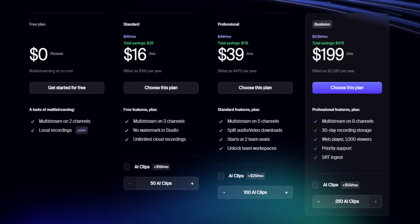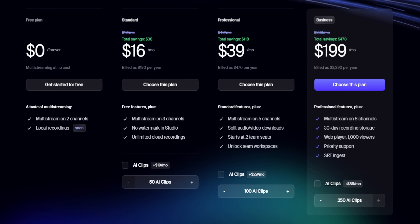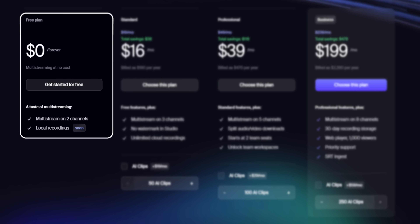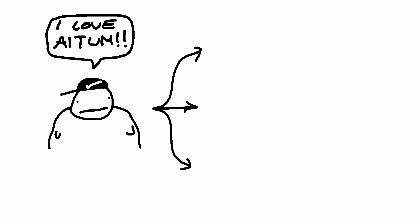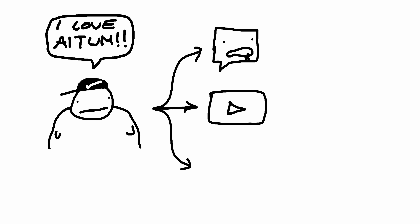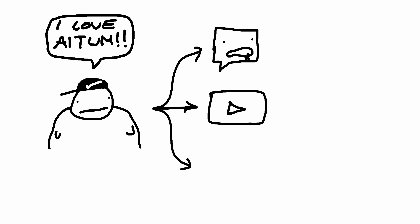The only thing is, Restream.io does cost money — but only if you want to stream to more than two places. Here's my solution to use it without paying a single cent: we're going to use ATOM Multistream to stream to Twitch, YouTube, or wherever you want, because ATOM Multistream is free and you can stream to as many platforms as you want. Then we'll also stream to Restream.io, but only connect our TikTok account to it, so you don't pay anything since Restream is free for one or two platforms. It sounds complicated, but it's really easy.